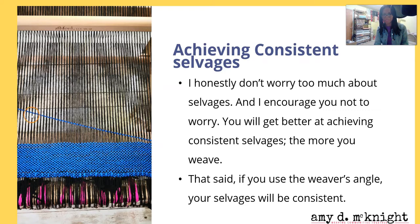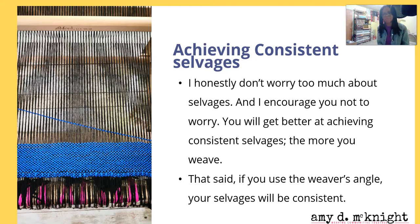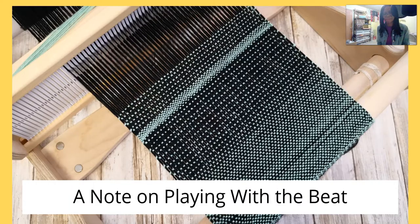If you use a weaver's angle — represented in this picture by the angle going to the right, or the opposite direction going the other way — you're going to get consistent salvages. A weaver's angle is about 30 to 45 degrees depending on the thread. As you weave, you'll be able to figure out what angle you need and get a feel for what you need to do to get your salvages consistent.